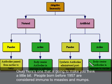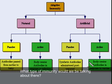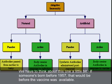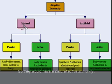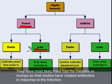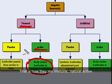Here's one that makes you think: people born before 1957 are considered immune to measles and mumps — what type of immunity is that? If someone was born before 1957, that would be before vaccines were available, so in all likelihood they actually had the measles or mumps. Their body created antibodies in response to the infection, so that is natural active immunity.